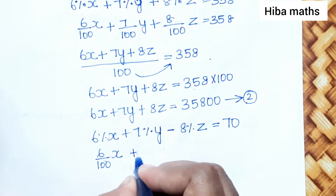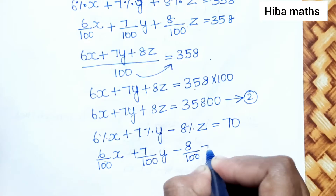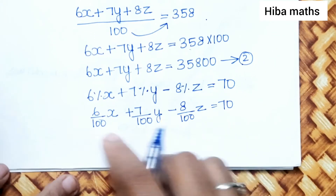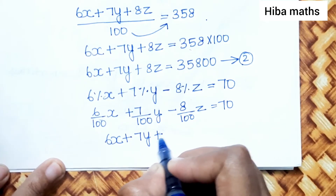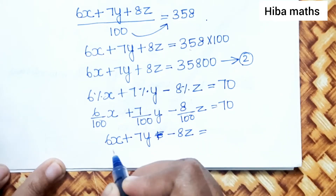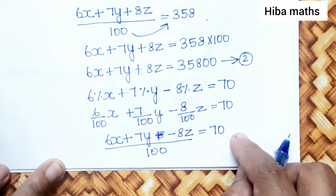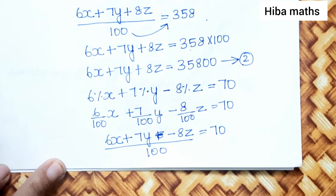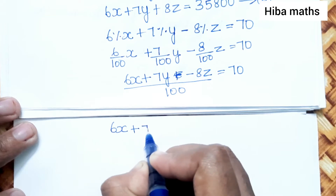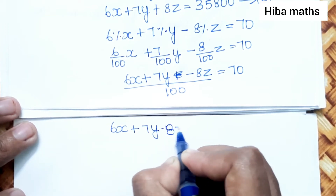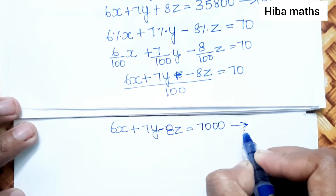That gives us: 6 by 100 into X, plus 7 by 100 into Y, minus 8 by 100 into Z equals 70. Simplifying: 6X plus 7Y minus 8Z divided by 100 equals 70. Multiplying by 100: 6X plus 7Y minus 8Z equals 7,000. This is the third equation.